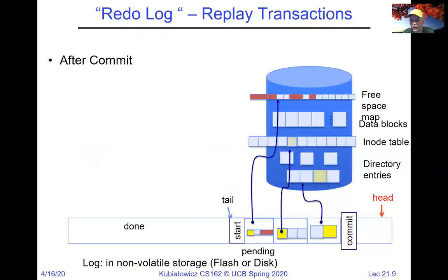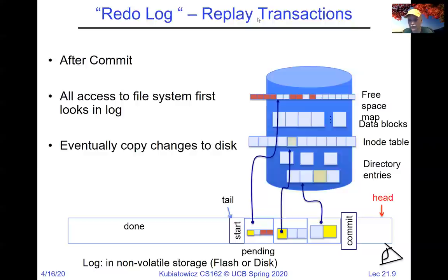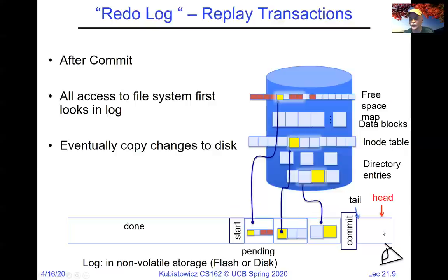After we have the commit, in the background or on reboot, we start redoing these changes by actually applying them to the physical disk file system. Each log entry gets applied and eventually all the blocks on disk are updated. At that point, the tail is moved and the commit record is thrown out. This journal is really a type of log used only until it gives us good transactional semantics, and the data in it is only kept until we've applied it to the real file system.